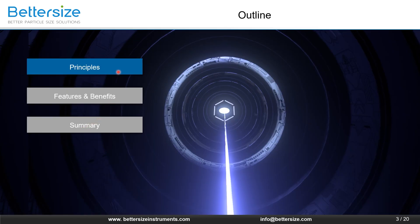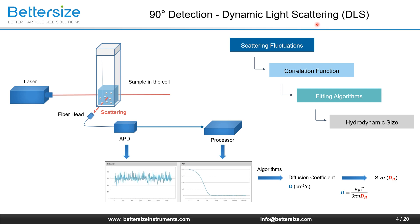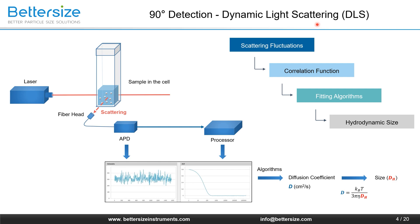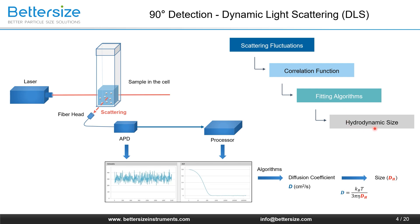The first section is principles. At the beginning of this talk, we need to understand the principle of dynamic light scattering DLS technology. As we know, there are many instruments and methods for particle sizing, and DLS is one of the most popular means for characterizing submicron and nanomaterials. Briefly speaking, the scattering fluctuations of particles are detected and then converted into a correlation function. Then, by using fitting algorithms, the average size based on intensity is calculated.